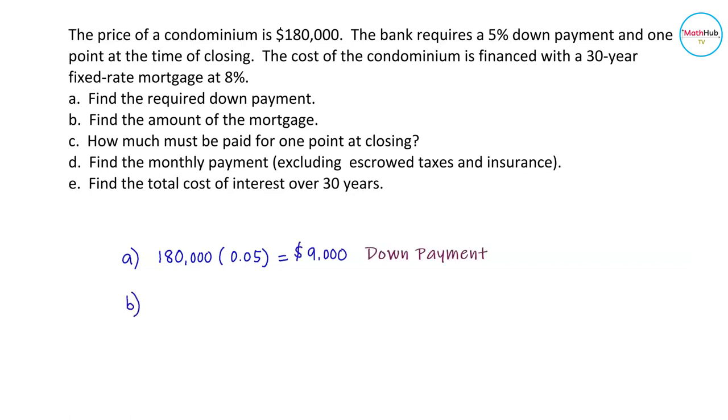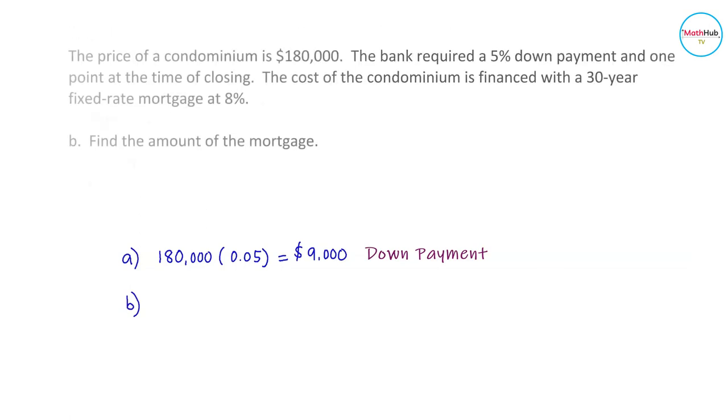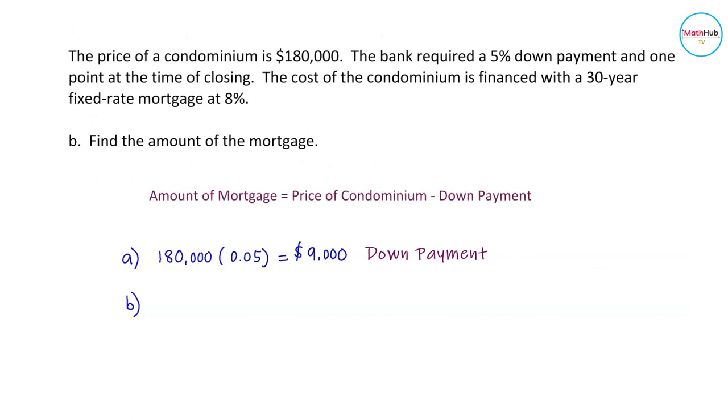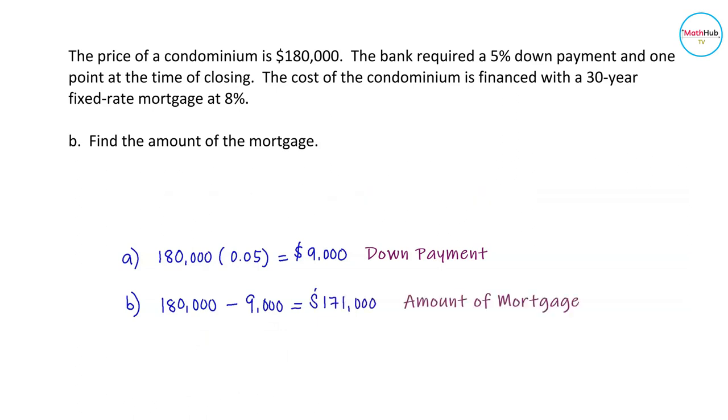To find the amount of mortgage, we will have to deduct this down payment from the price of the condominium. So 180,000 minus 9,000. That is equal to $171,000. So this is the amount of mortgage.